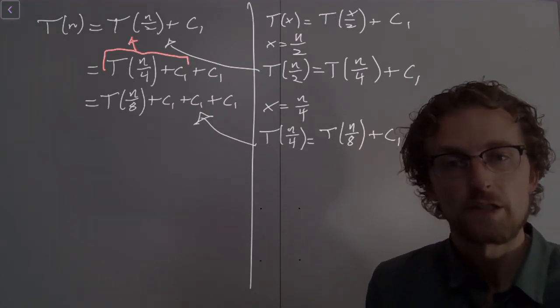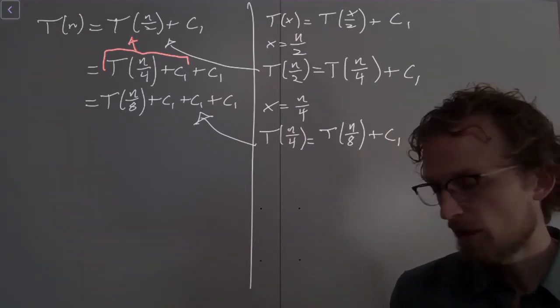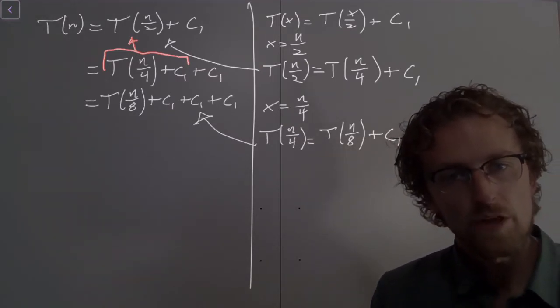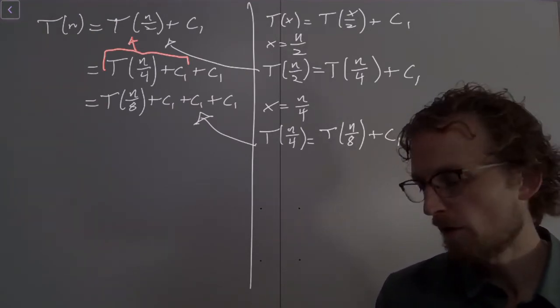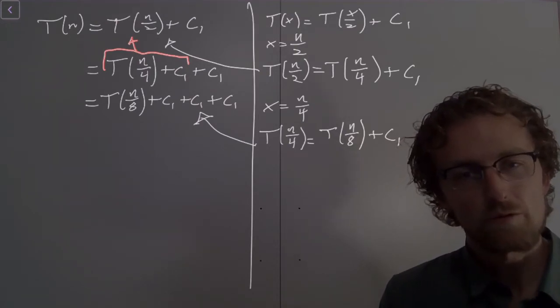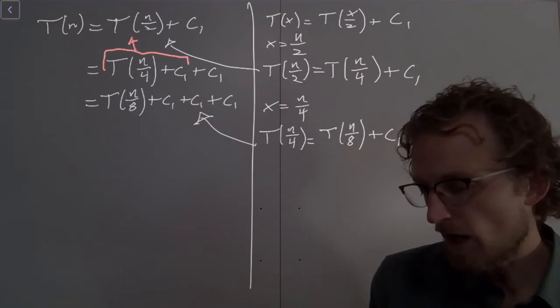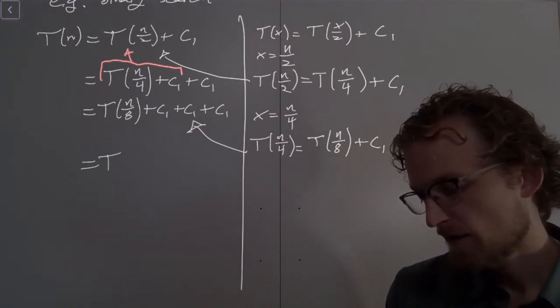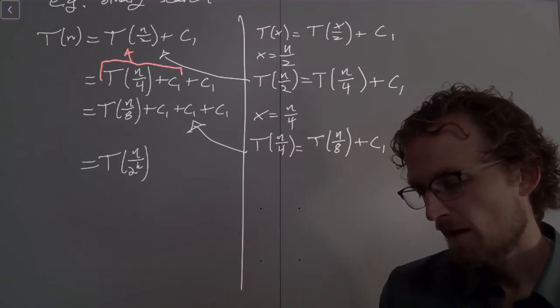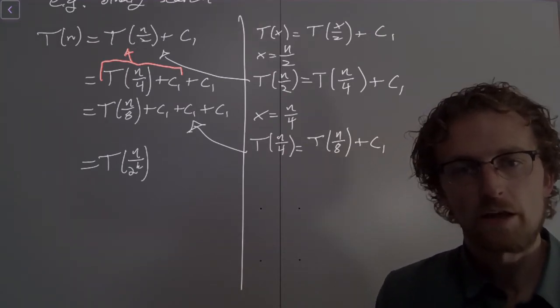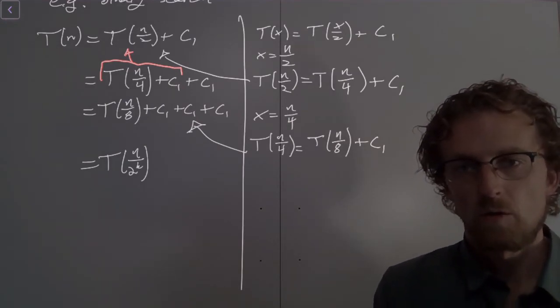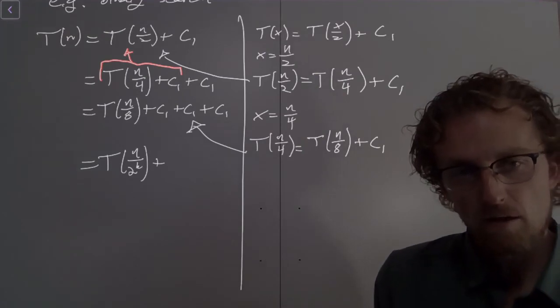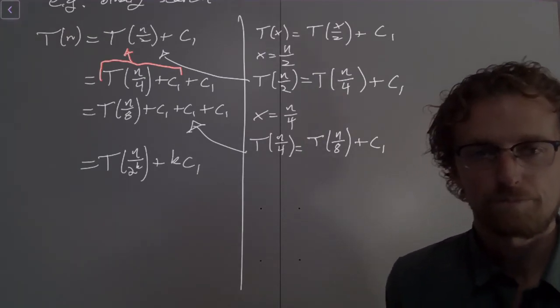Okay, so what do we have here? Well, we have the denominator or the number that we're dividing n by, we're having that increasing as a power of 2 every time. And every time we increase the power of 2, we add another constant term. So let me just write you out the pattern that we have here. This is 2, 4, 8, clearly 2 to the k. So this is T of n over 2 to the k. And when k was 1 in the first line, we had one constant term, one overhead term. When k was 2 in the second line, we had two overhead terms. When k was 3, we had three overhead terms. So then what do we have? We have k overhead terms. So then this is plus k times c1. So there's our pattern.